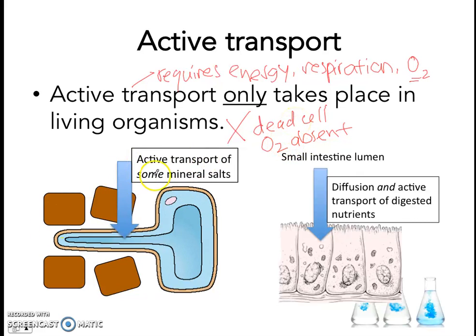We've seen an example of active transport in plants: root hair cells use active transport to absorb some mineral salts.